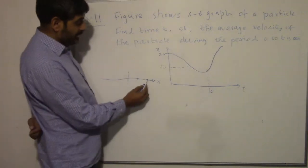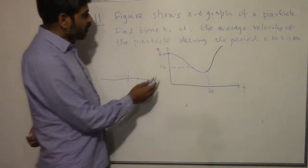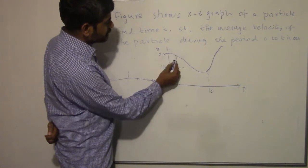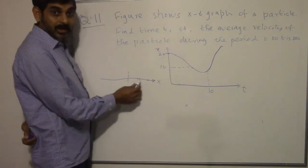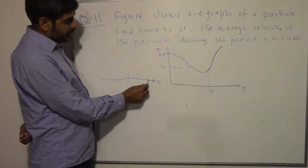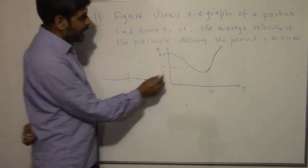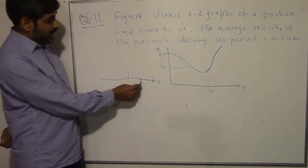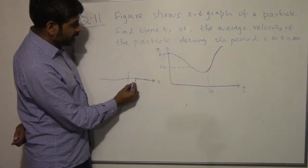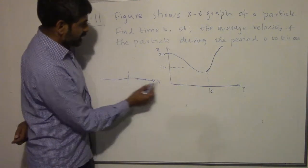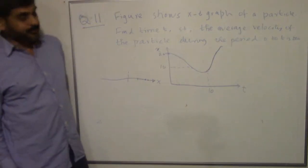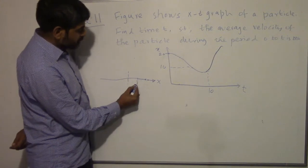At t = 0, if I draw an x-axis and mark 20 here, the particle is right at displacement 20. As time goes by, the displacement reduces — let's say at t = 2 it's around 18. So the particle is moving in the negative x direction. As more time passes, the particle keeps moving in this direction, and somewhere around 8 seconds it reaches its lowest point, maybe around 12 or 14 units of distance.